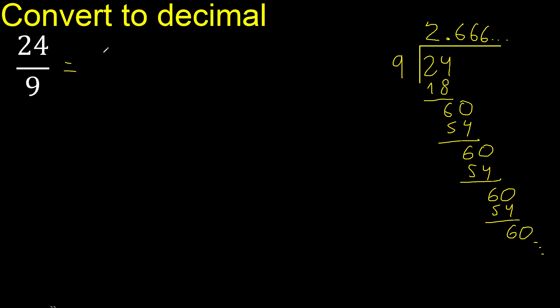2 point. After the point, 6 repeat. Therefore like this, 6 repeats. Therefore like this, repeat. Finish.